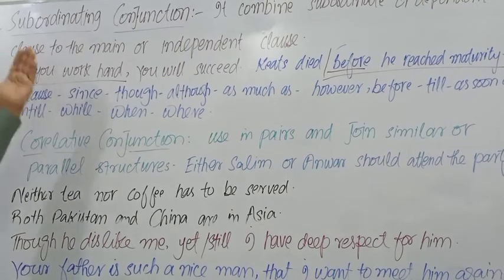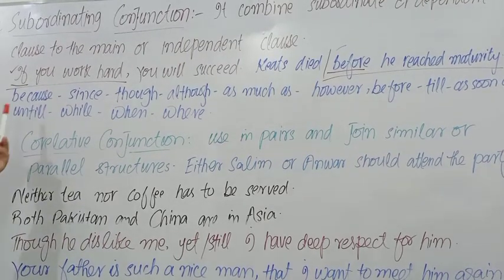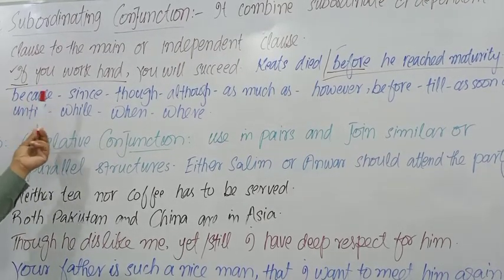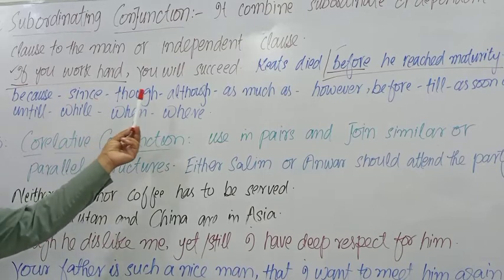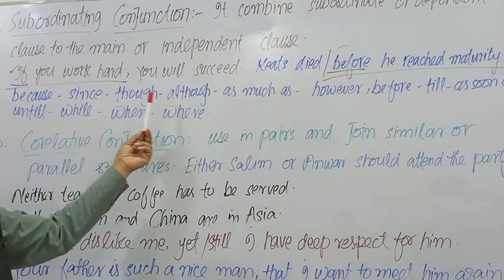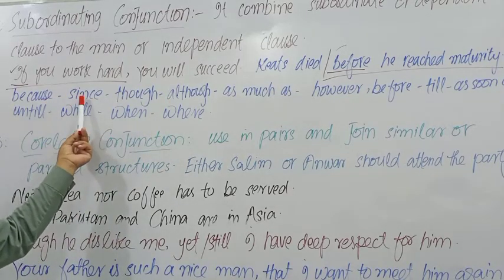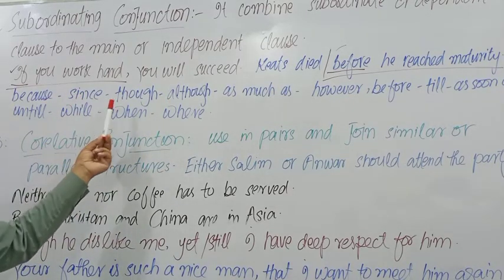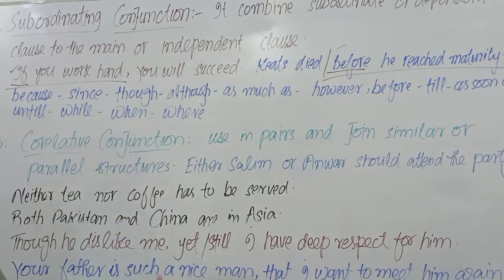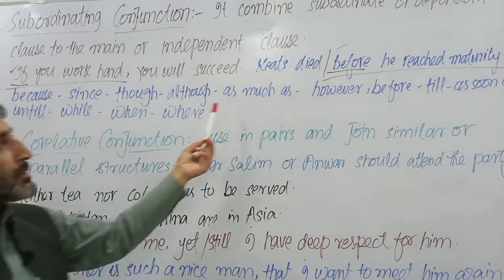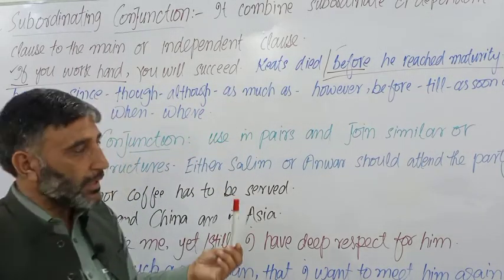کچھ اور subordinating conjunctions یہ ہیں: because (کیونکہ)، since (چونکہ)، though (اگرچہ)، although (اگرچہ)، as much as (اتنا زیادہ جتنا کہ). جن جملوں میں یہ الفاظ شروع میں آتے ہیں وہ subordinating conjunction والے sentences ہوتے ہیں.